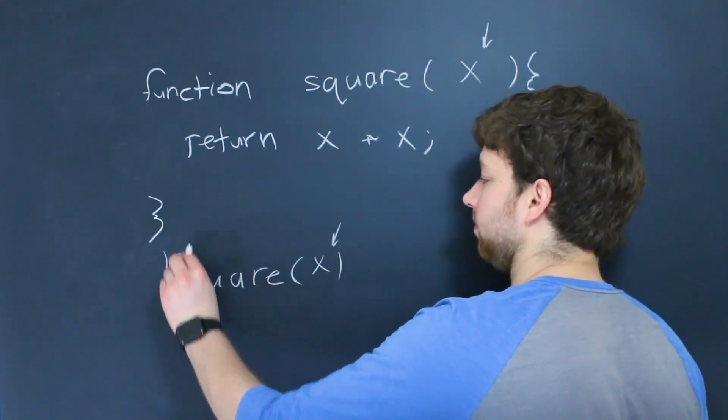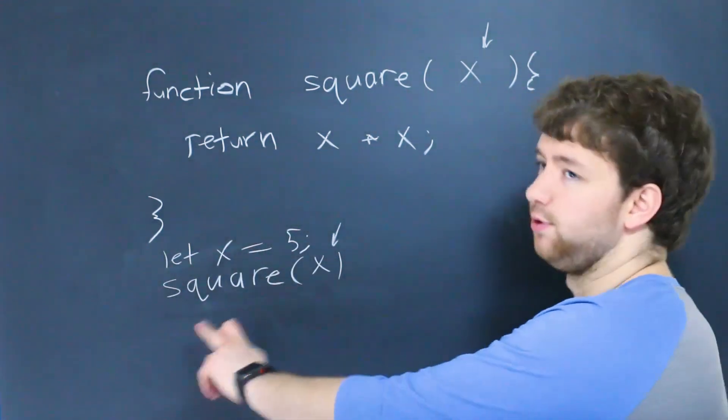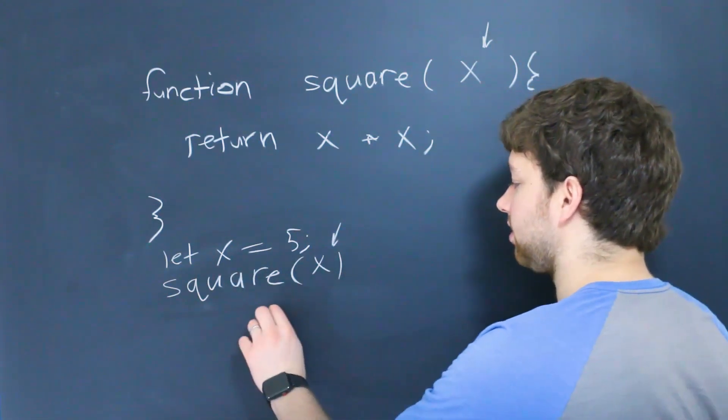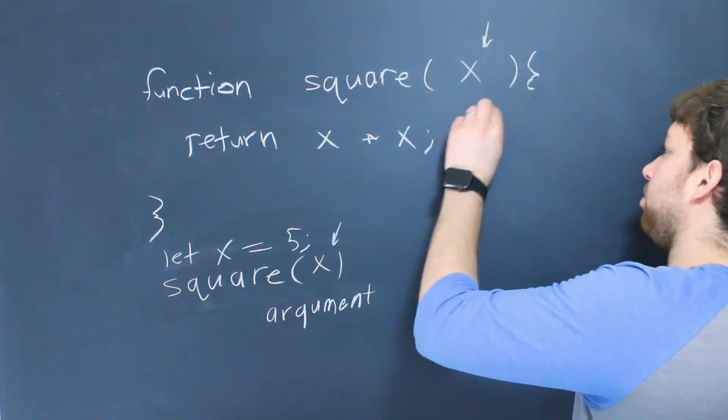So for example, we could say, let x be the value 5. And then we could pass x into this function call. Now, when you are passing something into this, it's known as an argument. But the actual variable inside of the function is known as a parameter.